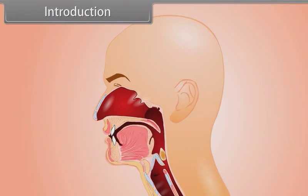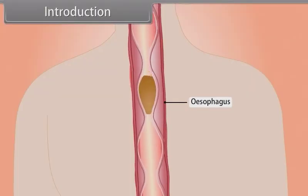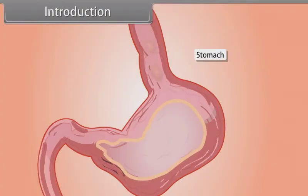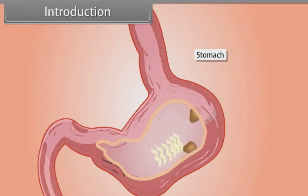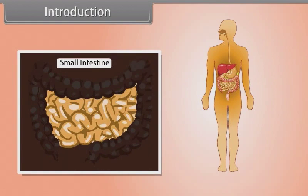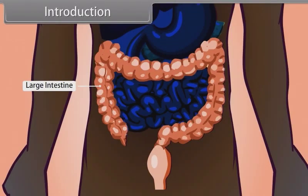Through the mouth and then through the esophagus, food goes to the stomach where digestion of protein starts. Then food enters into the small intestine, from where the undigested food goes to the large intestine and is ejected out from the body through the anus.